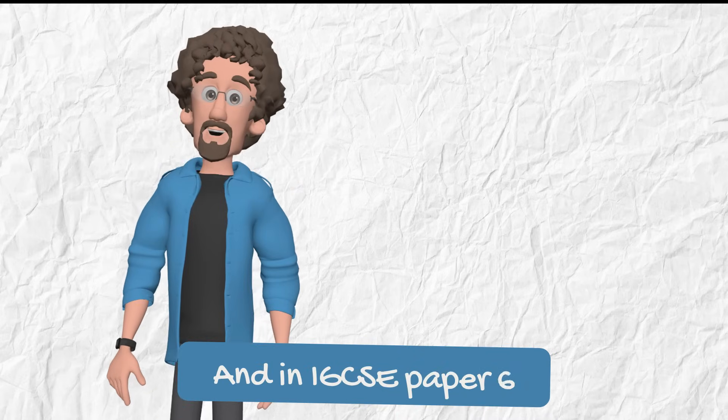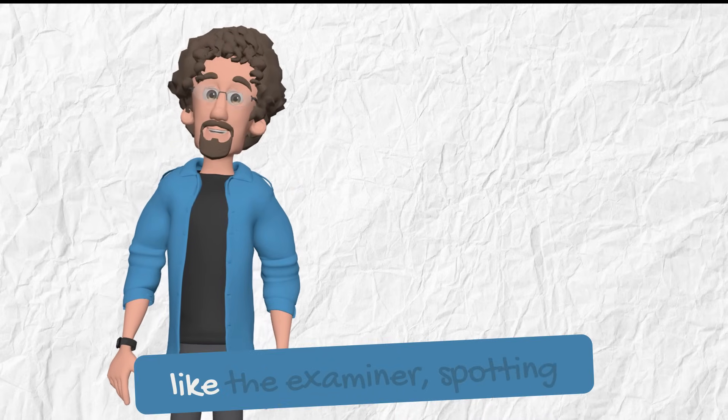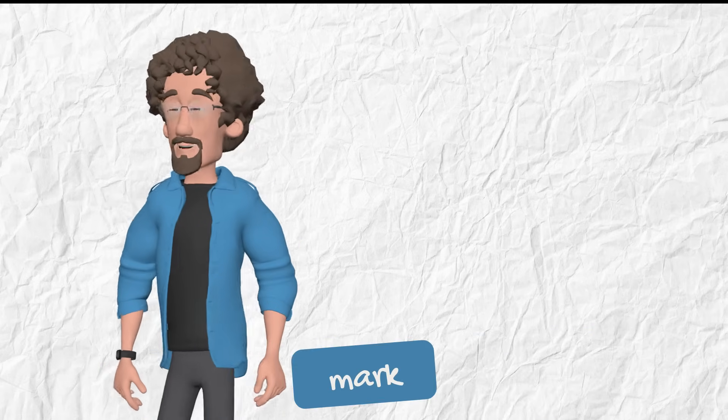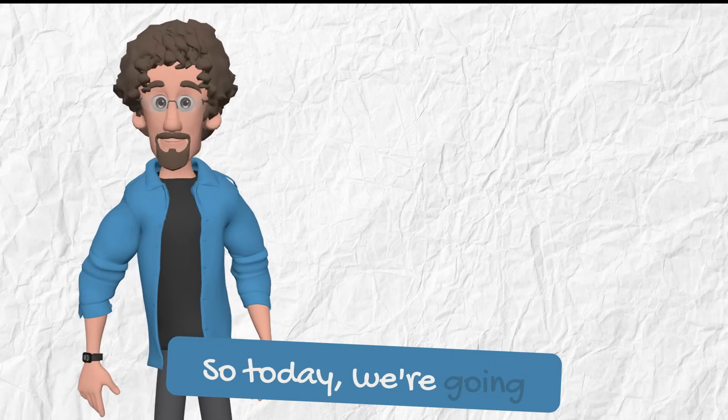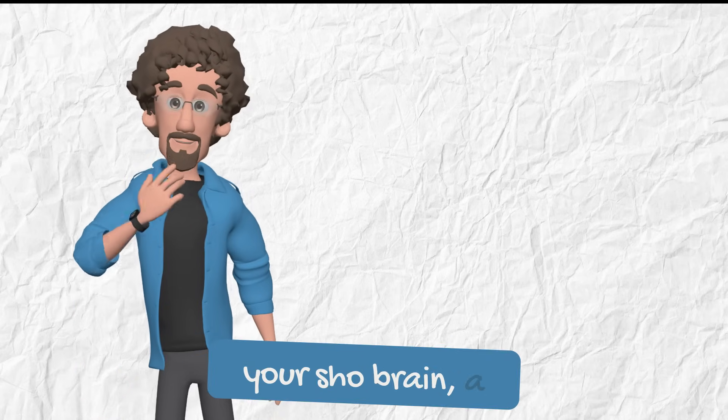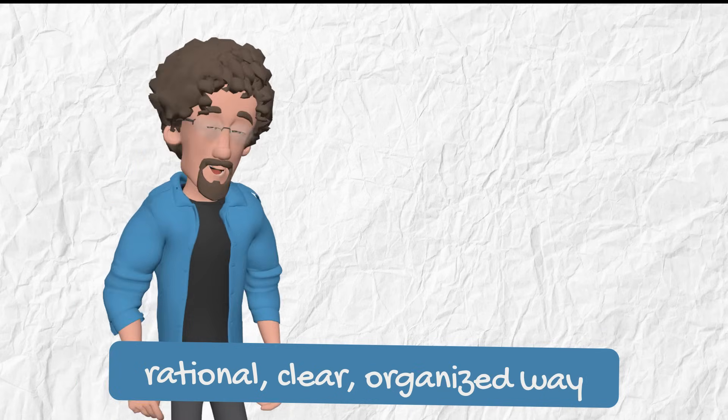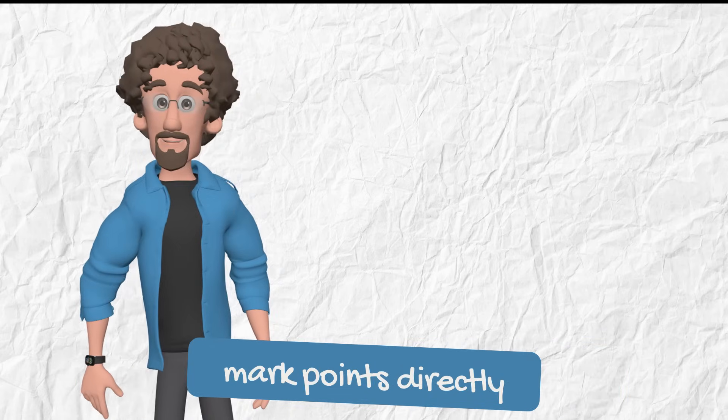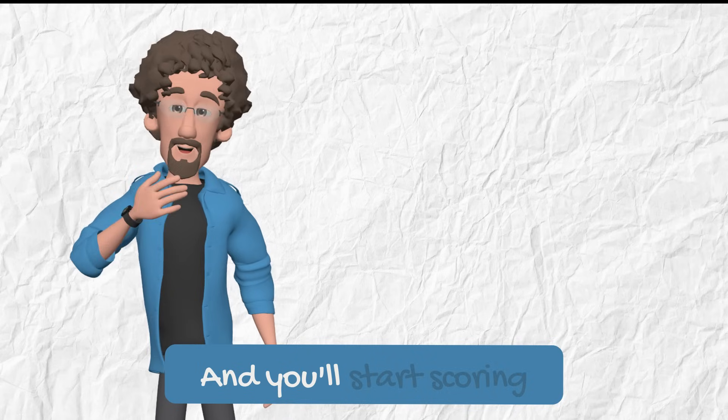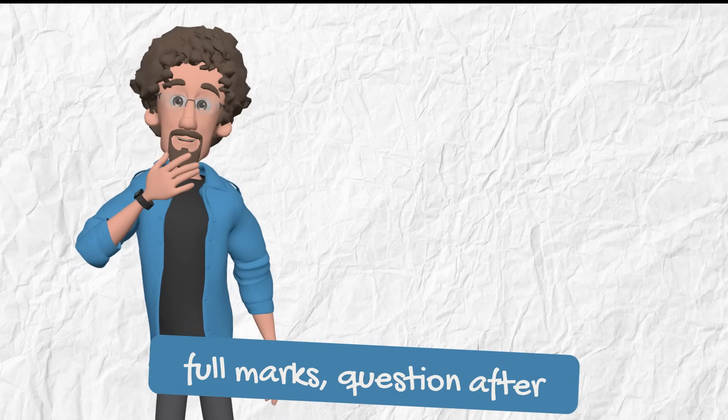And in IGCSE Paper 6, smart means thinking like the examiner, spotting the pattern, and writing exactly what earns the mark. So today, we're going to do something powerful. We're going to build your show brain, a rational, clear, organized way of thinking that targets mark points directly. You'll stop guessing, you'll stop waffling, and you'll start scoring full marks, question after question.